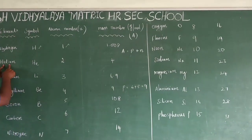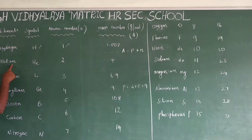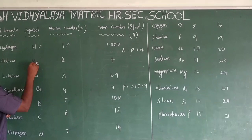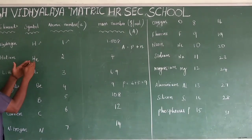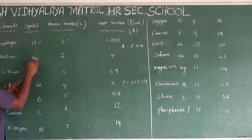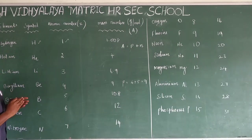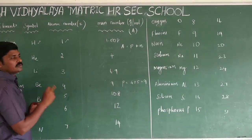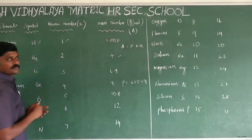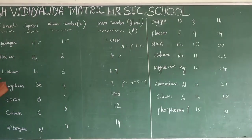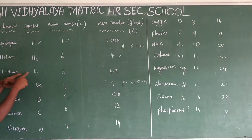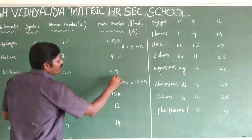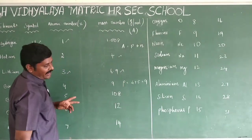The second element is Helium, symbol He. The first letter is a capital letter and the next letter is a small letter. Helium: atomic number 2, mass number 4. The third element is Lithium, symbol Li: atomic number 3, mass number 6.9 (or 7).